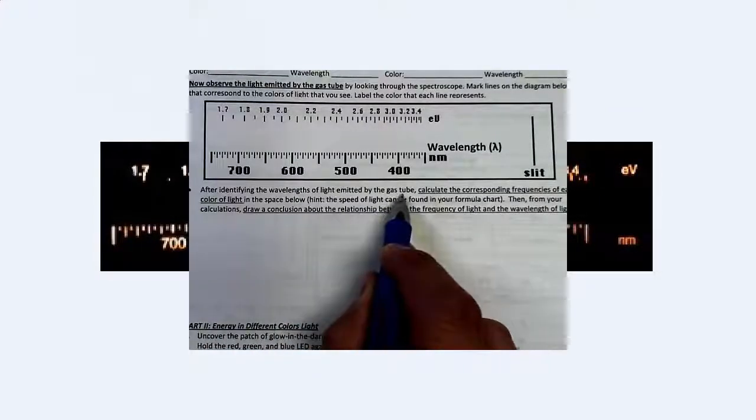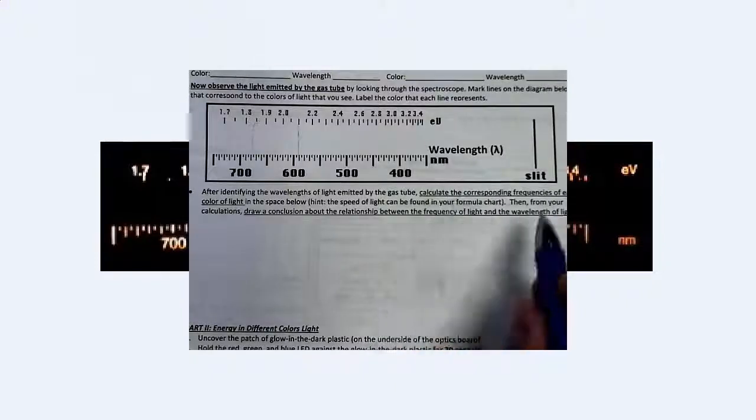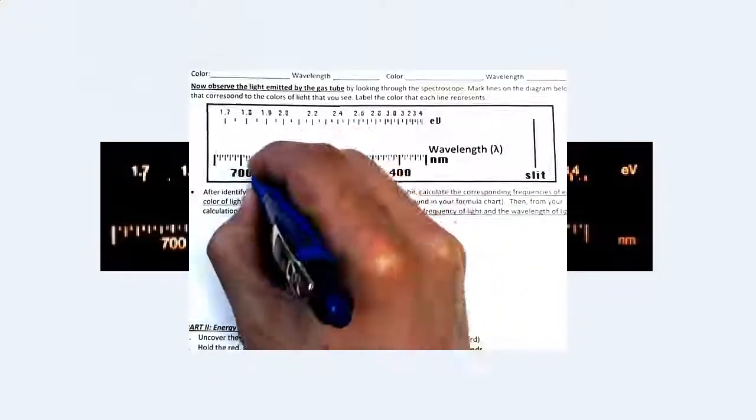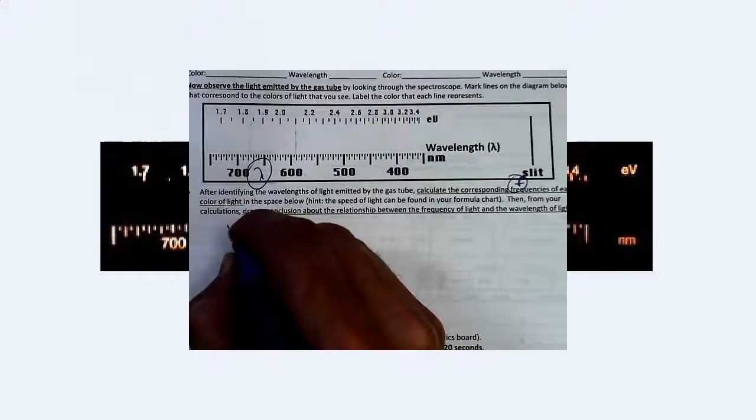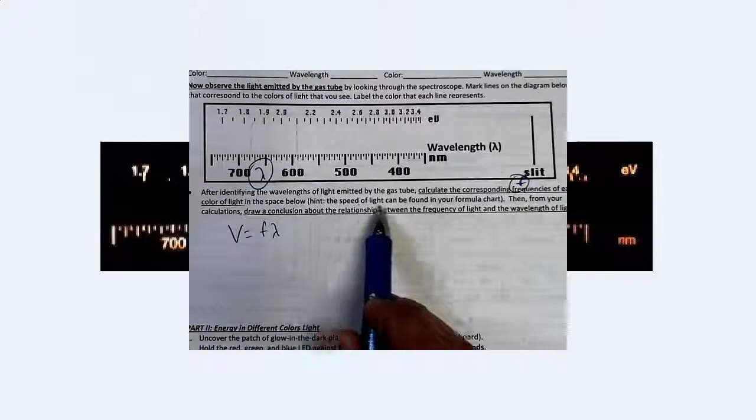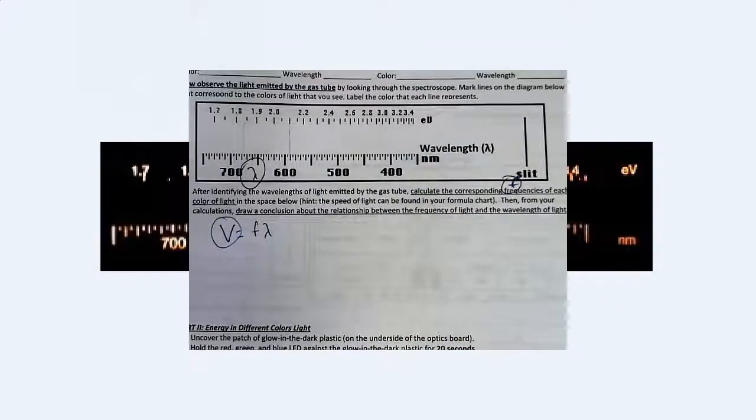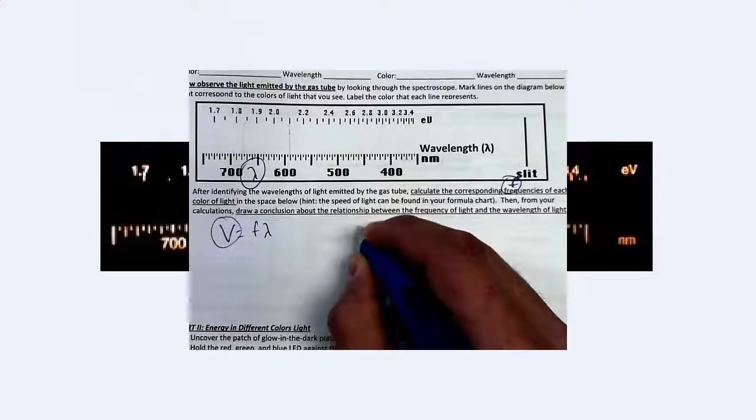All right. The next part says after identifying the wavelengths emitted by the gas tube, so ideally you have some lines drawn in here, let's say. They want you to calculate the corresponding frequencies of the color of light. So we have the wavelengths from up here. We simply measure them on the scale, and we want to calculate the frequency. And hopefully you now know an equation that has wavelength and frequency in it, and that equation is V equals F lambda. Now, it says the speed of light can be found in your formula chart. Go ahead and look there. You'll find the speed of light. We're dealing with light now, so you need to go and find the V for light. It is in your formula chart. I'm not going to put it here. And so you're going to simply do a calculation for each one of these lines you see. Some of them have more than others. I want you to see as many as you can get. I want you to get at least four lines, at least four calculations here done.